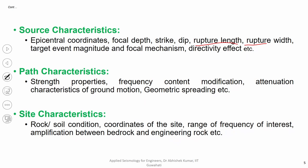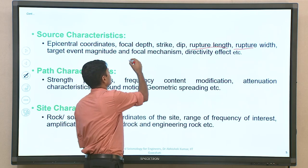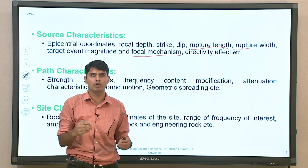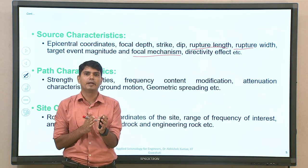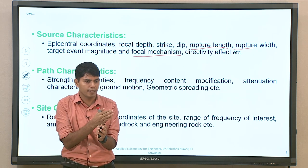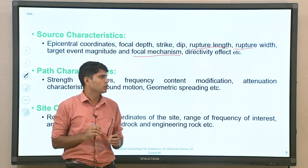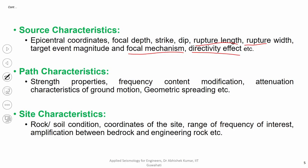Target event magnitude — how much is the magnitude of the earthquake which triggered or is expected to trigger during the design life of the structure. Focal mechanism has already been highlighted. Directivity effect — with respect to the site, what is the orientation of the fault, because ground vibrations recorded along the direction of fault movement and perpendicular to fault movement will be different. In order to account for that, one has to also take into account the directivity effect.